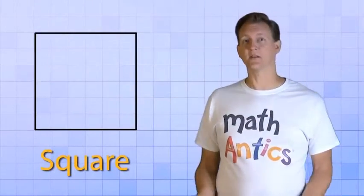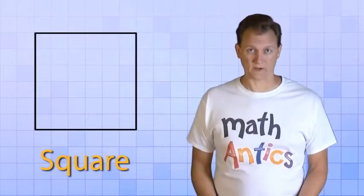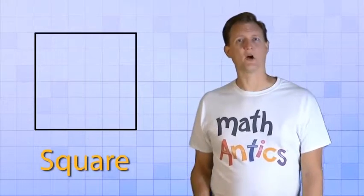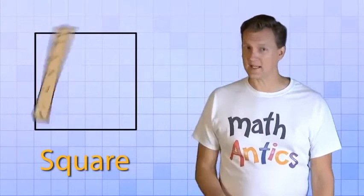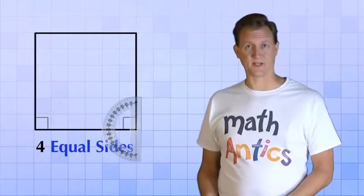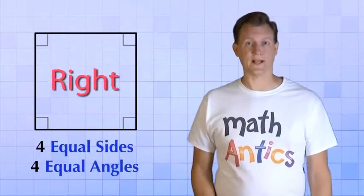A square is a special kind of quadrilateral. It's a quadrilateral because it has four sides, and it's special because all four of those sides are exactly the same length, and all four of its angles are exactly the same size. In fact, they're all right angles.